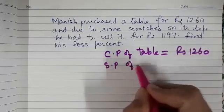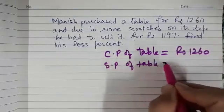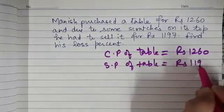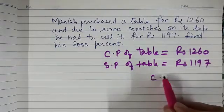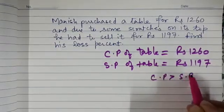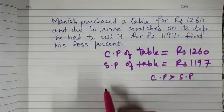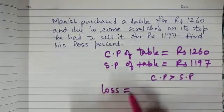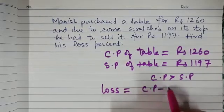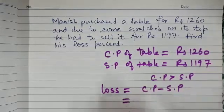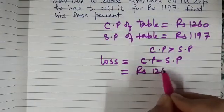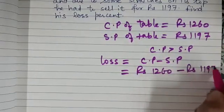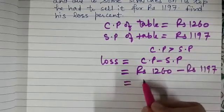Now which is more, CP or SP? CP is more, so in this case there will be a loss. So loss is equal to CP minus SP. So let us calculate this: it will be equal to rupees 1260 minus rupees 1197 and it is equal to rupees 63.